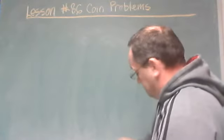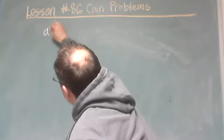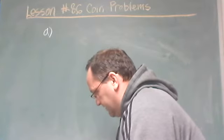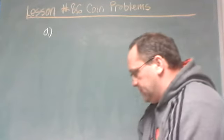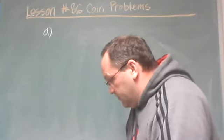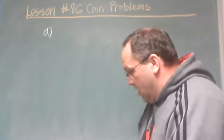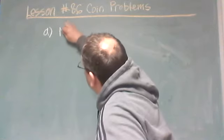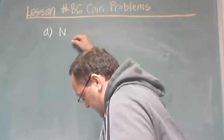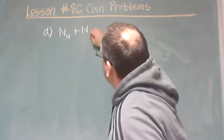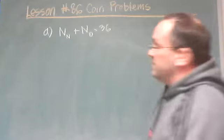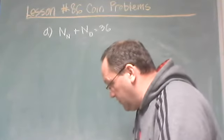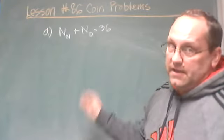Practice problem A: Ahmad and Regina had 36 coins that are nickels and dimes. If the value of the coins is $2.90, how many coins of each type do they have? Those are our two unknowns. The first equation is simply the total number of coins: the number of nickels plus the number of dimes equals 36.